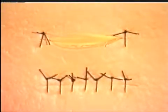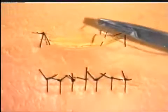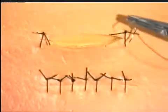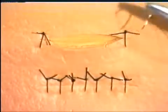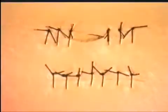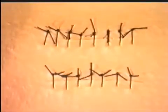You are now in a position to continue to close this ellipse, working from each end alternately, inserting interrupted sutures like this. This makes for a most satisfactory closure.